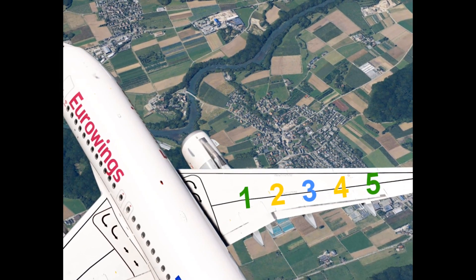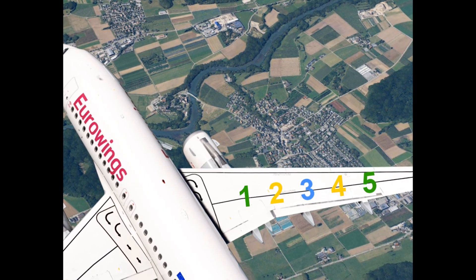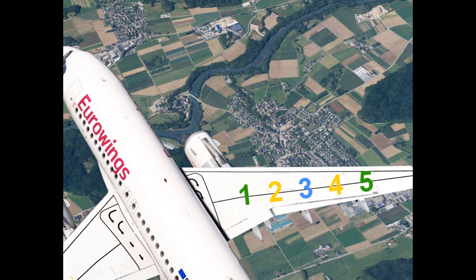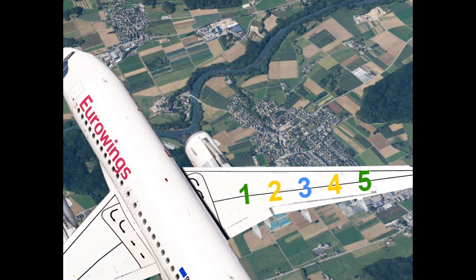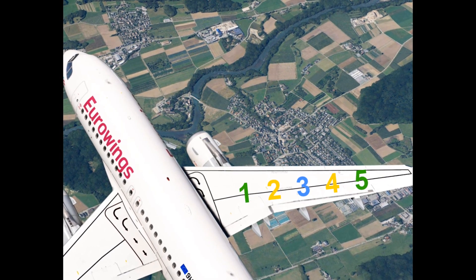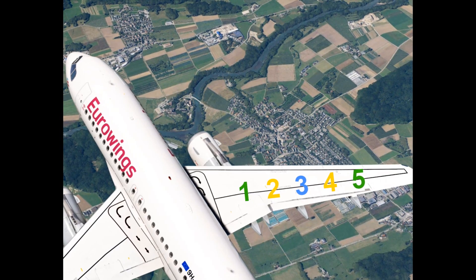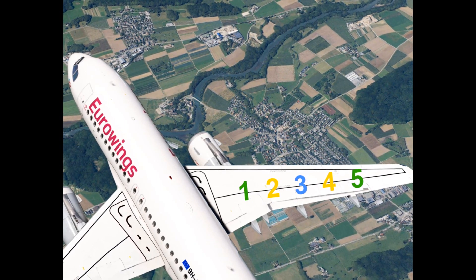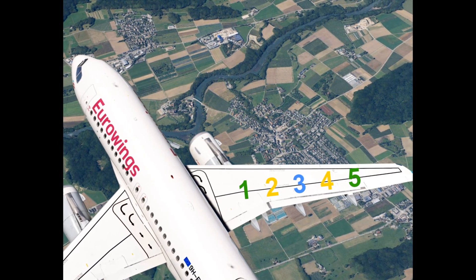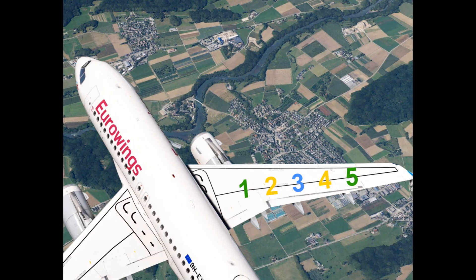The Airbus A320 series has five spoilers on each side of the wing. They are located on the upper side of the wing and numbered one to five on each side. You may have noticed that each number has a different color, and this color corresponds to the hydraulic system that powers that specific spoiler. This matters because on the Airbus, a single hydraulic failure is usually manageable — the PTU transfers remaining pressure to the other side.